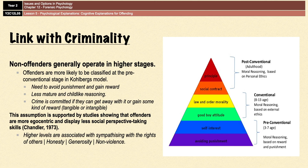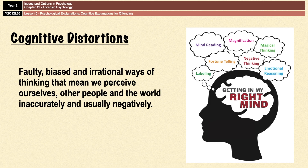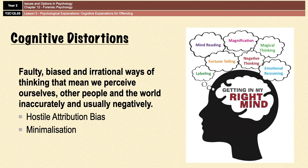It was also found that individuals who reason at a higher level tend to sympathize more with the rights of others and exhibit more behaviors like honesty, generosity, and non-violence. Moving on, the next couple of theories look at cognitive distortions. Cognitive distortions are faulty, biased, irrational ways of thinking that result in us perceiving ourselves, other people, and the world inaccurately and usually negatively. There are two that you need to know about for offending behavior: hostile attribution bias and minimalization.